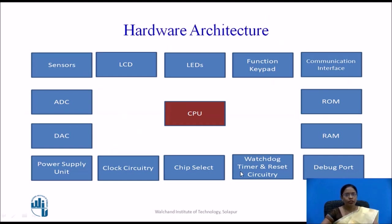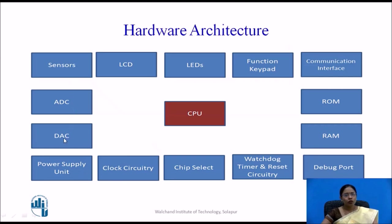In the hardware architecture, the CPU is at the center — it is the heart of the architecture. The different blocks include sensors, LCD, LED displays, functional keypad, communication interface, memory unit with RAM and ROM, a debug port, watchdog timer and reset circuitry, chip select, clock circuitry, power supply unit, analog-to-digital converter (ADC), and digital-to-analog converter (DAC).